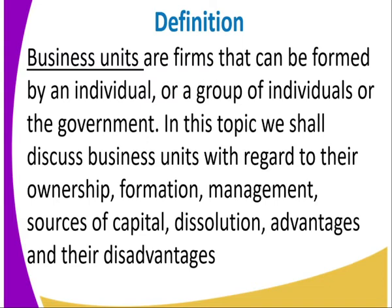When we talk about the business unit, remember they must be aimed at getting profit. When an individual starts a business unit or firm, we refer to it as sole proprietorship. When a group of individuals starts one, it can give us a partnership, cooperatives, or companies — we get a number of them.